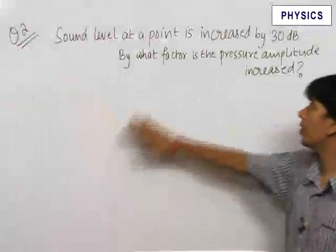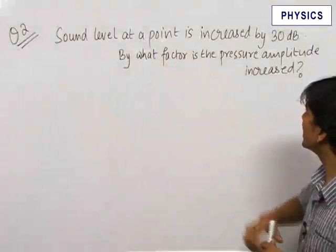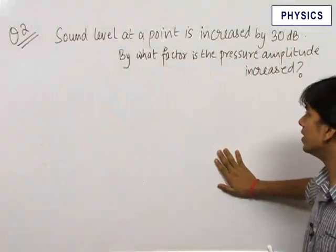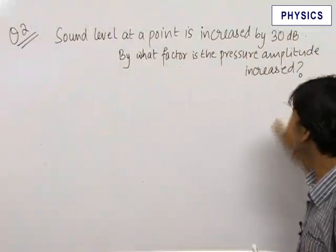In the second question, we have been given that a sound level at a point is increased by 30 decibels. We need to find out by what factor is the pressure amplitude increased.